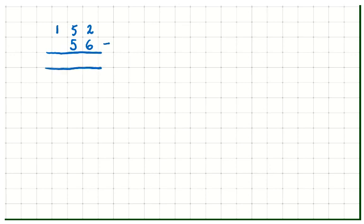Now, I don't want to work that out. I want to know roughly what my answer is going to be. So, I'm going to round my numbers to the nearest 10. So, 152 rounded to the nearest 10 is 150. And then 56 rounded to the nearest 10 is 60.